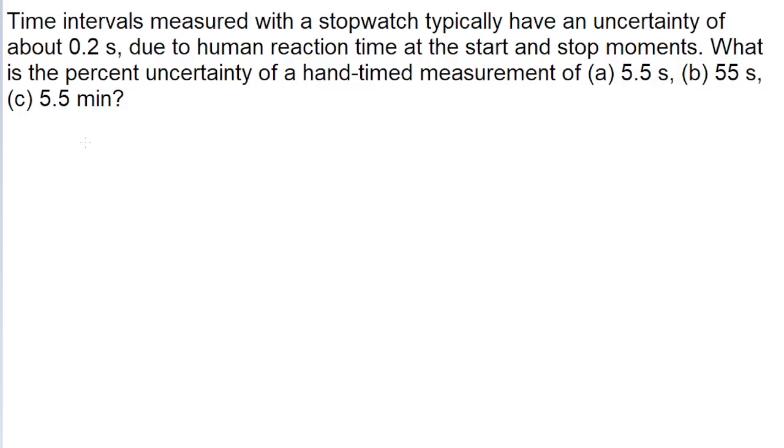Hey guys, in this problem we're told about three different stopwatch measurements in parts A, B, and C, and we're also told that we assume the stopwatch time has an uncertainty of about 0.2 seconds. We're asked to find the percent uncertainty in all three cases.